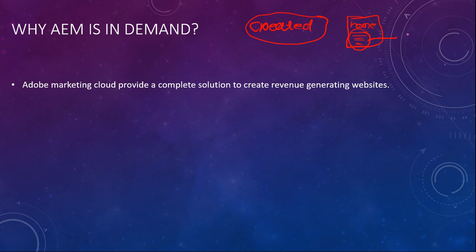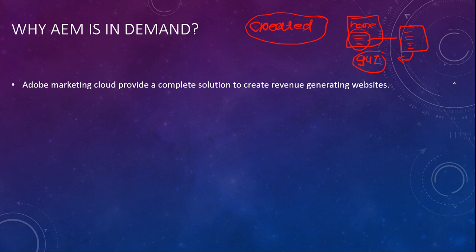If you want to change the images or add some content, we can easily do it using AEM — that's called content authoring. AEM is nothing but a CMS tool, and CMS provides a GUI for authoring the content. They have already provided this GUI, so you just have to simply add content inside it.